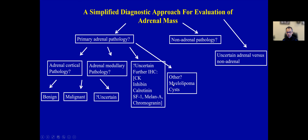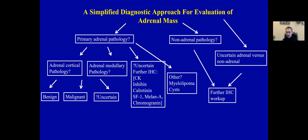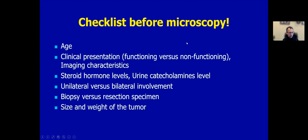If you are not dealing with primary adrenal pathology or are unsure, then you have two other important questions: am I dealing with non-adrenal pathology? For that, you will need further immunohistochemical workup depending on the type of morphology as well as the patient's history and other conditions. Before you start evaluation of these specimens, here is a checklist that will really help you narrow down your differential diagnosis.